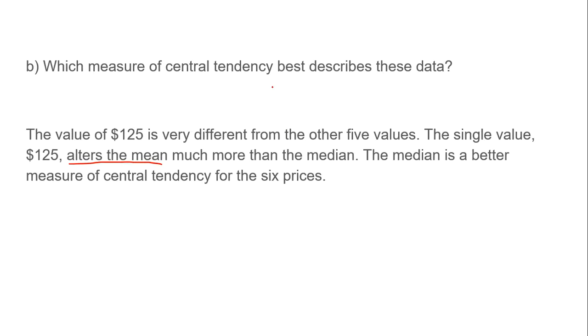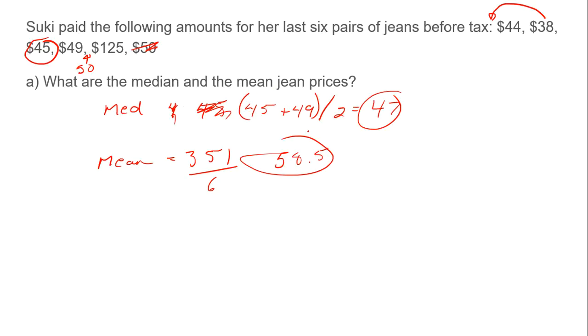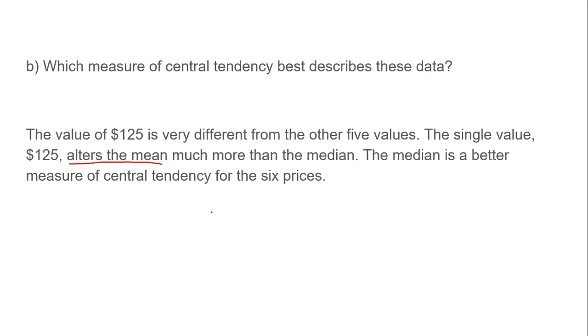The median, if we go back, would have been 45. The median is now 47, so it doesn't really change it that much, which means the median is the better measure of central tendencies for these. Again, it depends on what the question is asking and what each value spits out. You guys need to determine that and think critically for these questions.